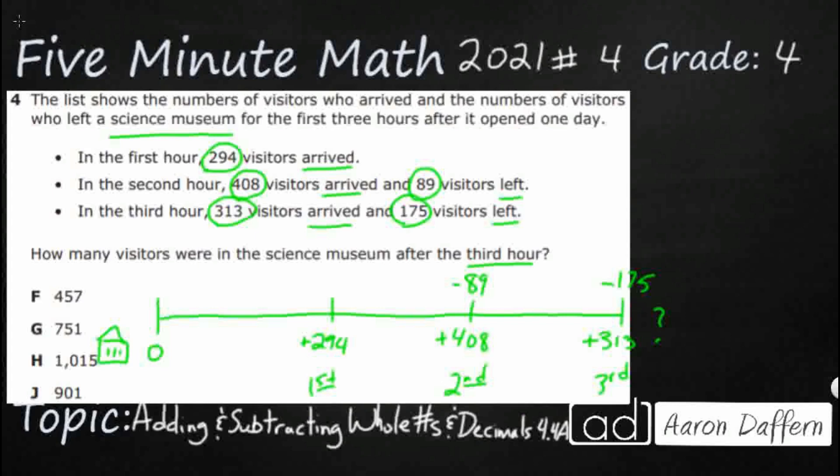So we've got a few different options here. I need to add and subtract all of these numbers. I could just add up all of my add-ins down here at the bottom. Let's try that. So 294, 408, 313, because you can stack your addition here. You can't really stack your subtraction. So let's see how many people arrived in total.